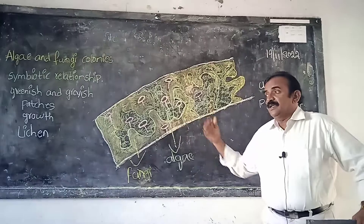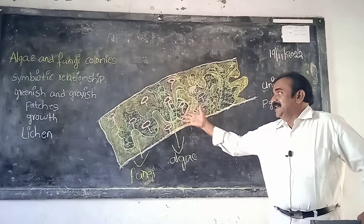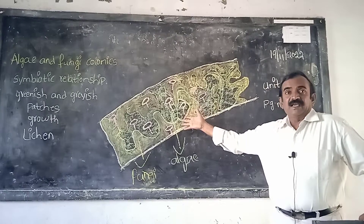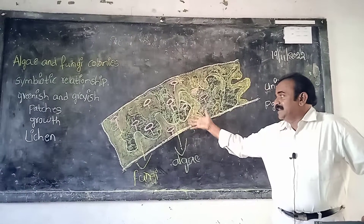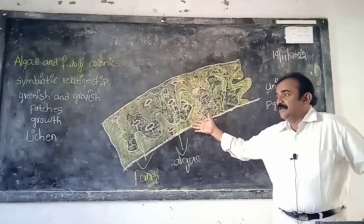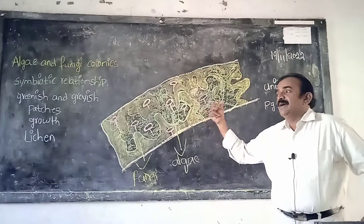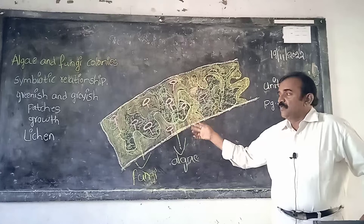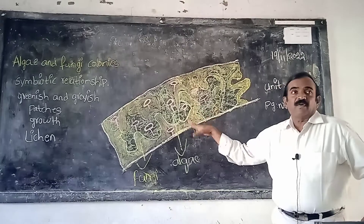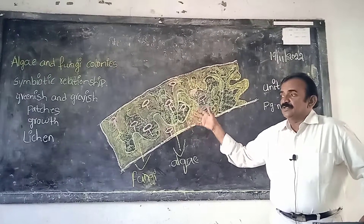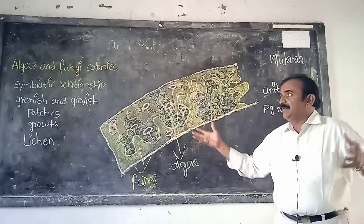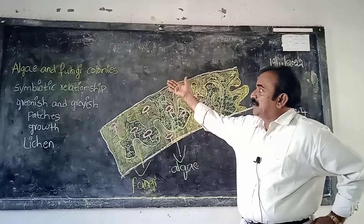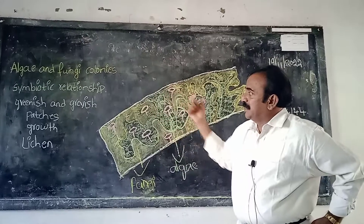Say symbiotic relationship. Name the green color algae which are growing on the branch — algae. Name the gray color structures which are growing on the branch — fungi. So both of them are living together. Algal forms are providing food to fungi, and fungi are providing shelter and protection to the algae. So here we discuss what algae and fungi are called — symbiotic relationship.